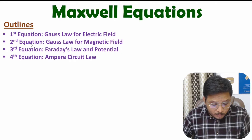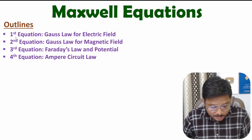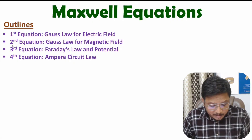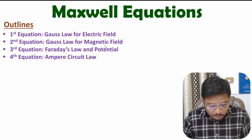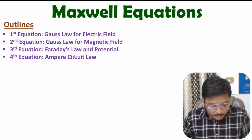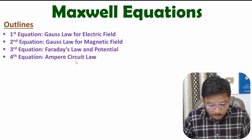We have four equations with Maxwell. The first equation is based on Gauss's law for electric field. The second equation is based on Gauss's law for magnetic field. The third equation is based on Faraday's law, and the fourth equation is based on Ampere's circuit law.